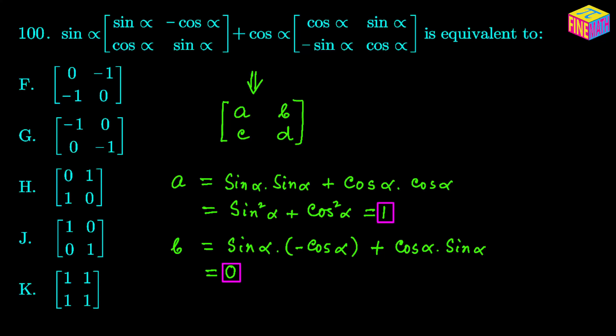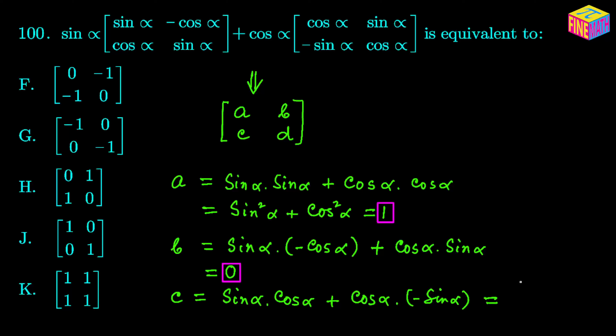Now let's calculate C, the first element of the second row. C will be equal to sin(α) × cos(α) from the first matrix plus cos(α) × (-sin(α)) from the second matrix. Again, they are both the product of sin(α) and cos(α), but one is positive and the other is negative, so they cancel each other, giving 0. C is also equal to 0.